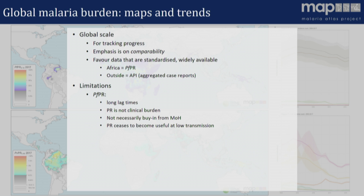There's also this issue that because parasite rate often stems from cross-sectional household surveys, there might not be the same buy-in to that data as an authentic yardstick of what's happening in a given country, as opposed to data that the Ministry of Health is generating through passive case detection at their health clinics. And it's also a bad metric at low transmission, simply because if you've got one infected person in 1,000, you're going to have to take a lot of samples to understand your pattern of infection — making it prohibitively expensive.